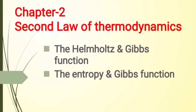In today's lecture we will see new points from chapter two: the second law of thermodynamics. We have already seen that the second law gives the conditions of spontaneity with the introduction of a new function, entropy. The criterion delta S greater than zero for a spontaneous process applies only to an isolated system. To decide about the feasibility of a process we must know the entropy changes of both the system and the surroundings, and this measurement is rather inconvenient.